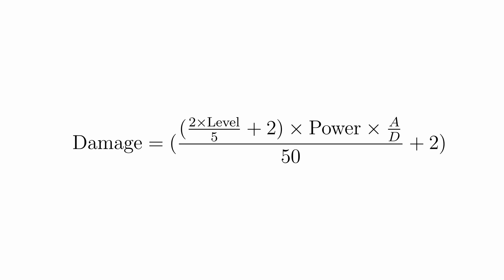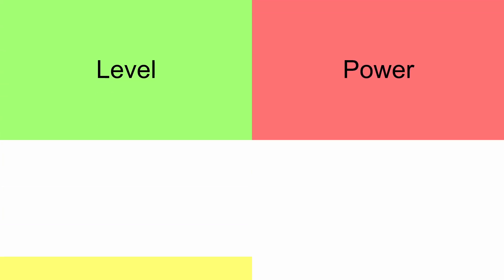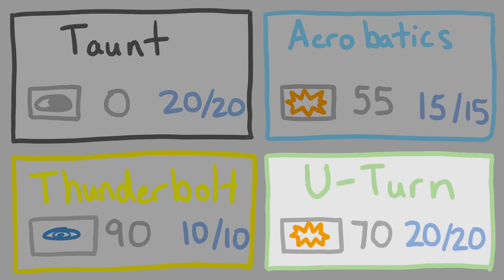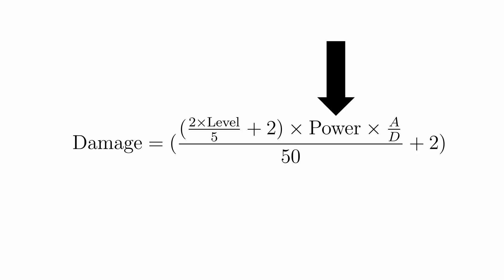So we have four things to worry about. Level, power, and A and D, which stand for attack and defense. For these values, we need to look at the moves used. Each move has its own base power, and the other two factors are multipliers depending on the level of the attacker, and the ratio of the attack and opposing defense stats.